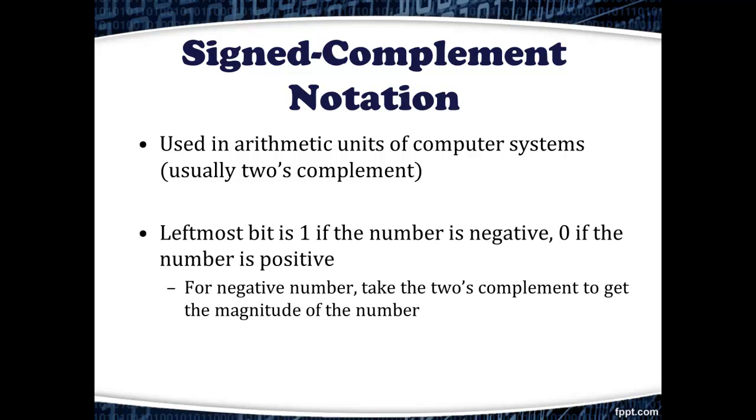In this notation, the leftmost bit is 1 if the number is negative and 0 if the number is positive. For a negative number, we take the two's complement to get the magnitude of that number. This notation simplifies the circuitry needed because you always add.